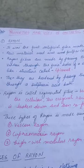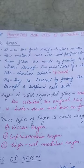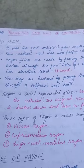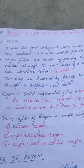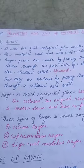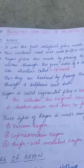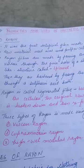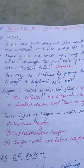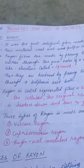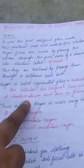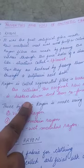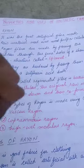Now, how is Rayon made? Rayon fibers are made by passing the viscose through the fine holes of a showerhead-like structure called a spinneret. They are then hardened by passing them through a sulfuric acid bath. After that, they are finally spun into Rayon yarns. Rayon is also known as a regenerated fiber, as the original raw material, cellulose, is broken down and then reformed.